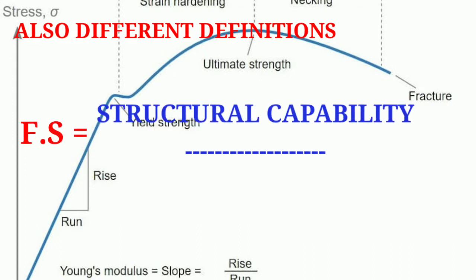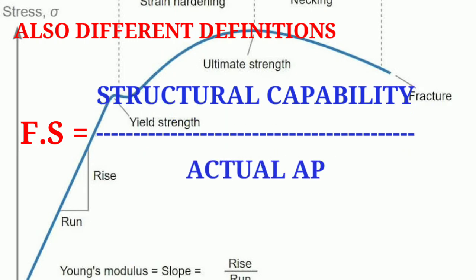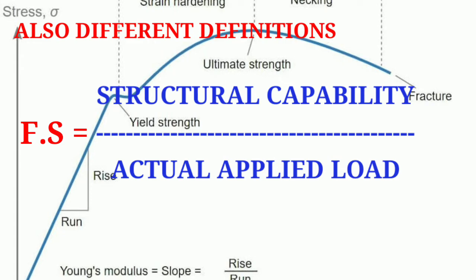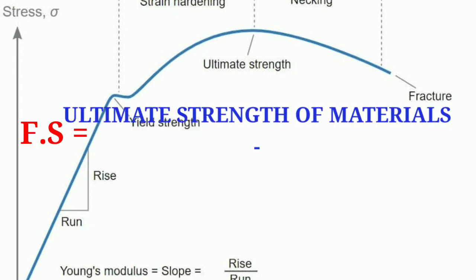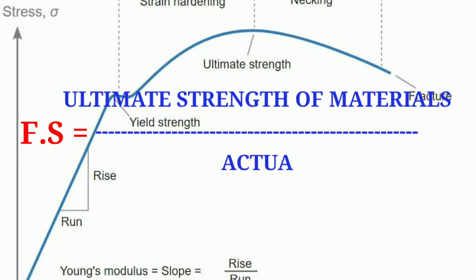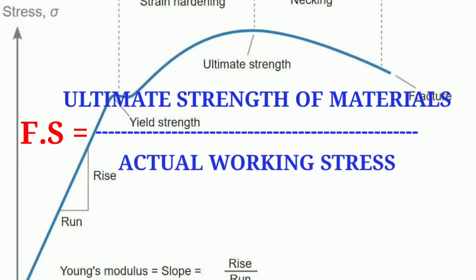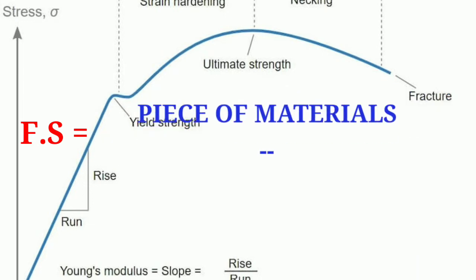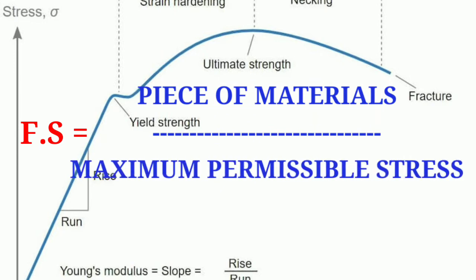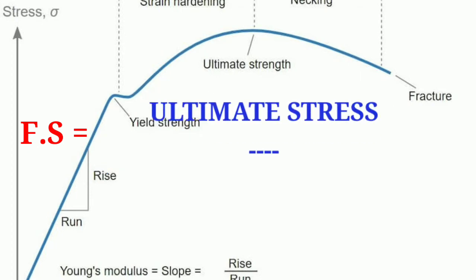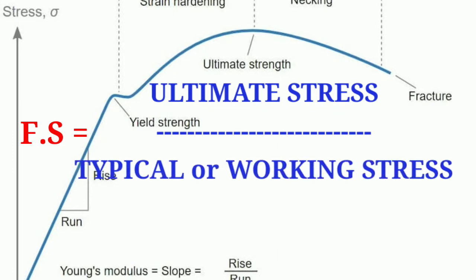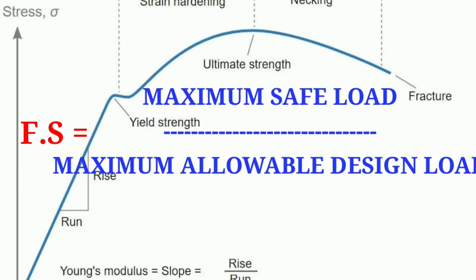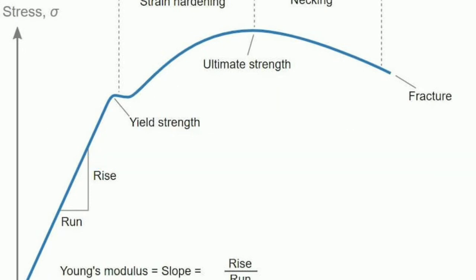The first definition: the factor of safety is structural capability to actual applied load. The second formula: factor of safety is ultimate strength of materials to actual working stresses. The third case: factor of safety is yield stress of materials to maximum permissible stresses — this is used in very rare cases. The factor of safety is also defined as ultimate stresses to typical or working stresses, and maximum safe loads to maximum allowable design loads.